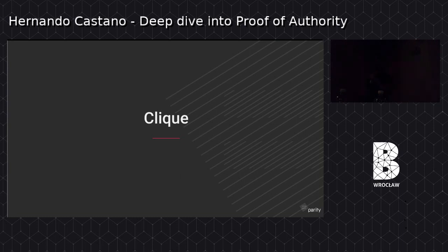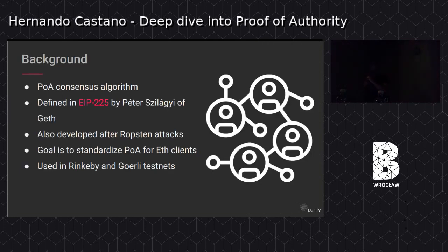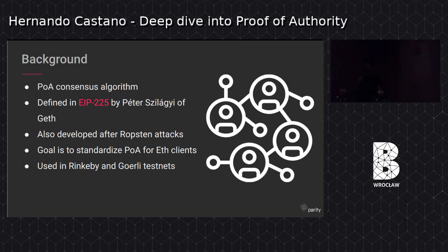Clique is the second consensus engine. It has a similar background to Aura in that it was developed in part due to the Ropsten attacks. Unlike Aura, it's properly specified in EIP-225, proposed by Peter from the Geth team. The goal for Clique is to standardize what a proof of authority algorithm looks like, enabling implementation across multiple clients — which is exactly what was done for the Goerli testnet, a Clique-based testnet launched about two months ago.